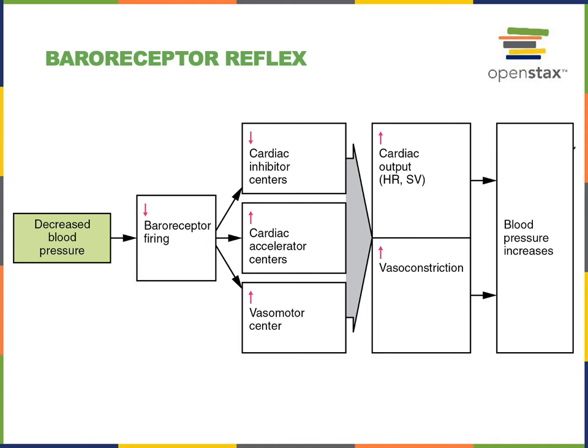In this example, we see the baroreceptor reflex mechanism in response to a decrease in blood pressure. When the baroreceptors of the carotid sinus and aortic arch detect a decrease in mean arterial pressure, that causes a decrease in the firing rate of action potentials of those afferent fibers in the glossopharyngeal and vagus nerves. This relays information into the cardiovascular control centers of the medulla oblongata, leading to decreased activity of the cardiac inhibitory center — which regulates the parasympathetic fibers controlling heart rate — and increased activity of the cardiac accelerator centers, which stimulate the sympathetic efferent fibers that regulate cardiac output.